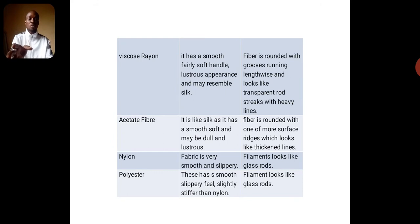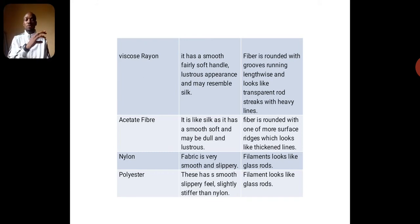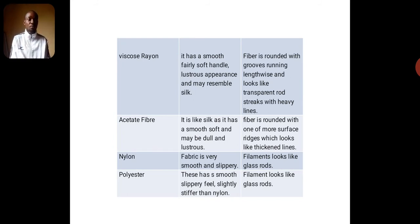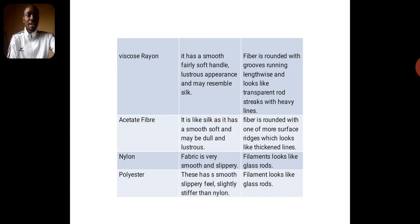Nylon when touched is very smooth and slippery. When viewed under the microscope, the nylon filament looks like glass rods. Polyester is another man-made fiber, and when touched it also has a smooth, slippery feel that is slightly stiffer than nylon. Under the microscopic test, the polyester filament also looks like glass rods.